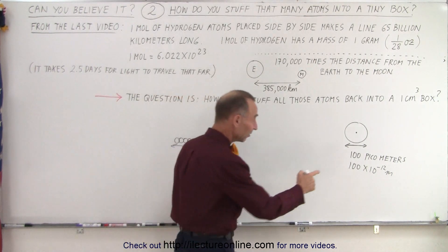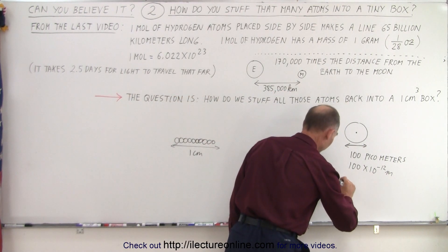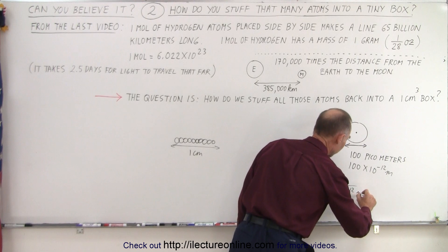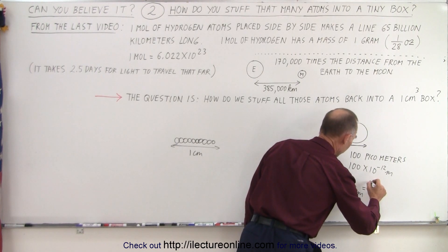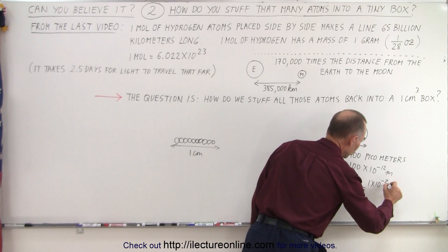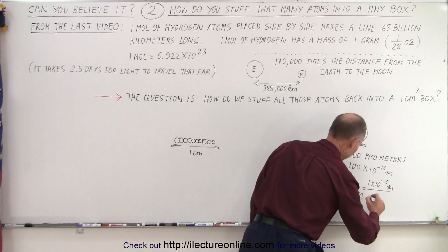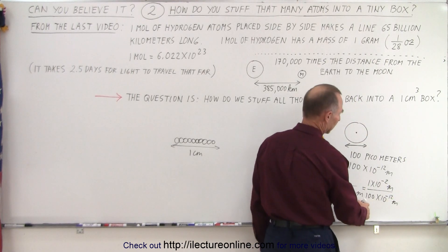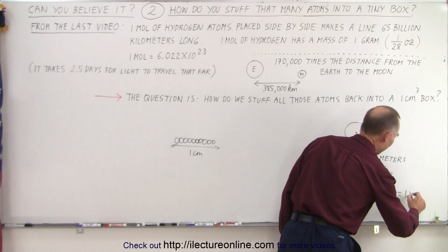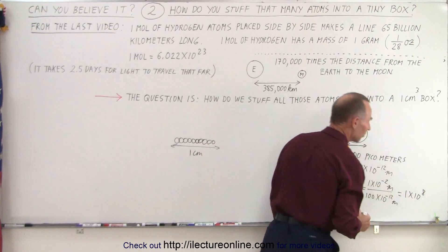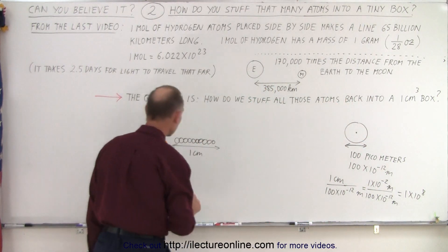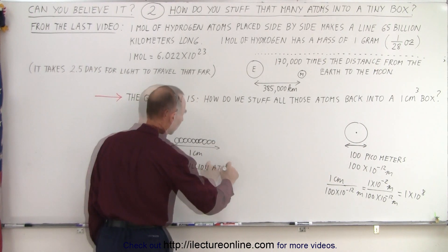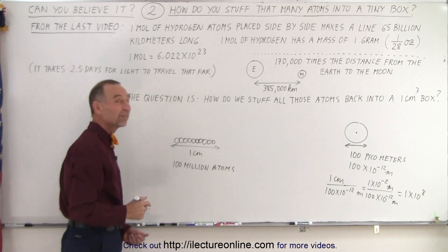What we need to do is divide this number into one centimeter. So one centimeter, which is 1×10^-2 meters, divided by 100×10^-12 meters equals 1×10^8. That's 100 million atoms. So 100 million atoms would make a line one centimeter long.